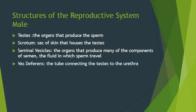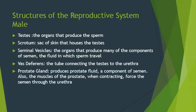The vas deferens are the tubes connecting each testes to the seminal vesicles and then to the urethra and the prostate. The prostate gland produces the final component of semen, called prostate fluid, and is filled with muscle tissue that contracts, forcing semen through the urethra and out the body.